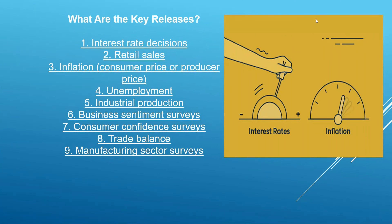Now, what moves the market? The key news releases we wait for include nine types. The most important are the interest rate decision, inflation (measured by CPI or PPI), and unemployment. We also have business sentiment surveys, consumer confidence surveys, trade balance, and manufacturing sector surveys. The top three — interest rate, inflation, and unemployment — are the most important because all the other indicators ultimately shape these three numbers.